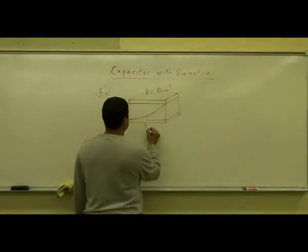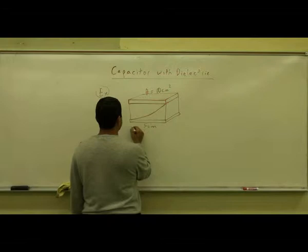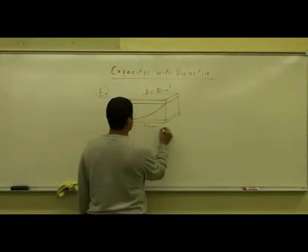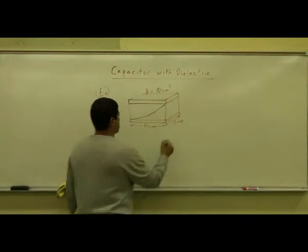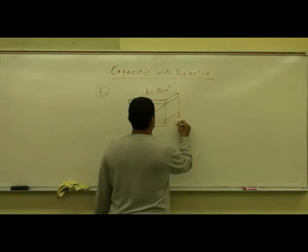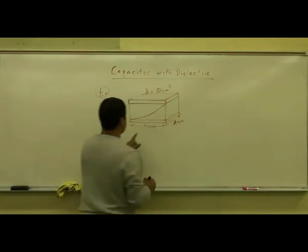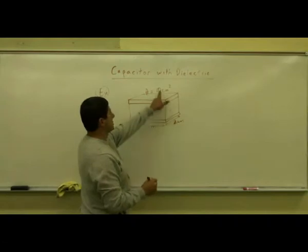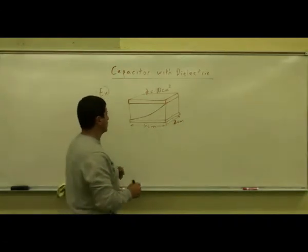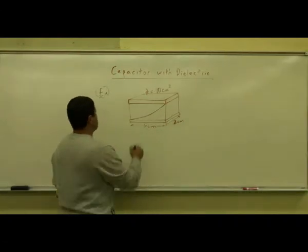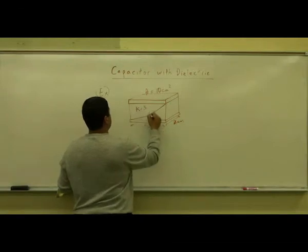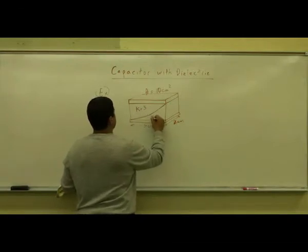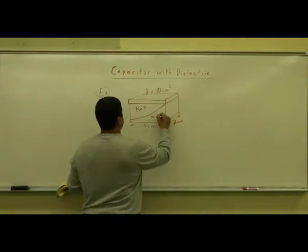The length from here to here is 5 centimeters and this direction is 2 centimeters, so 5 times 2 gives a surface area of 10. Let's say this dielectric has a constant of 3 and this one has a dielectric constant of 4.